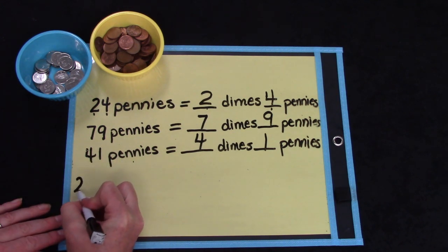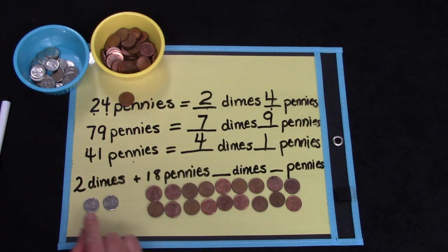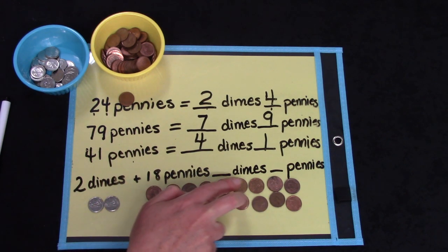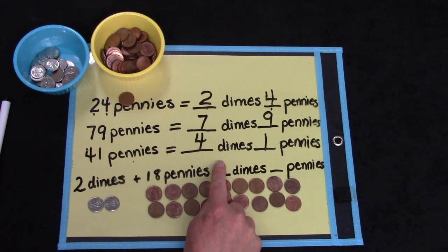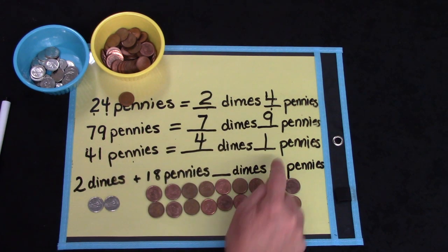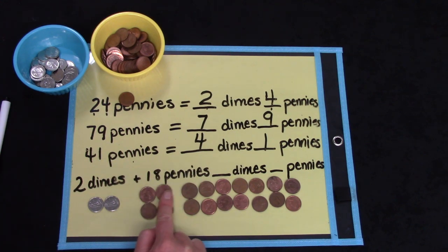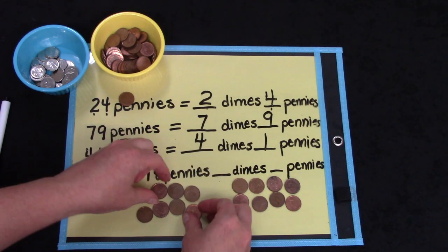Now I have a tricky question for you. Our tricky question says that we have two dimes and 18 pennies. 2, 4, 6, 8, 10, 12, 14, 16, 18. Hmm, how many dimes is that and how many pennies? Well, it's tricky because we have more than ten here, don't we? We can trade in 2, 4, 6, 8, 10 pennies for one dime.